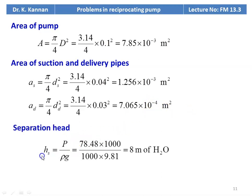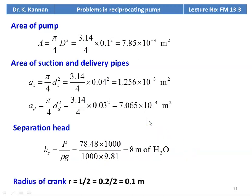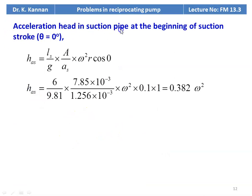Separation head = P/(ρg) = 78.48×1000 / (1000×9.81) = 8 m of water. Radius of crank R = L/2 = 0.2/2 = 0.1 m. Acceleration head in suction pipe at beginning of suction stroke (θ = 0°): H_AS = (LS/g) × (A/AS) × ω²R × cos 0° = 6/9.81 × (7.85×10⁻³ / 1.256×10⁻³) × ω² × 0.1 × 1 = 0.382ω².